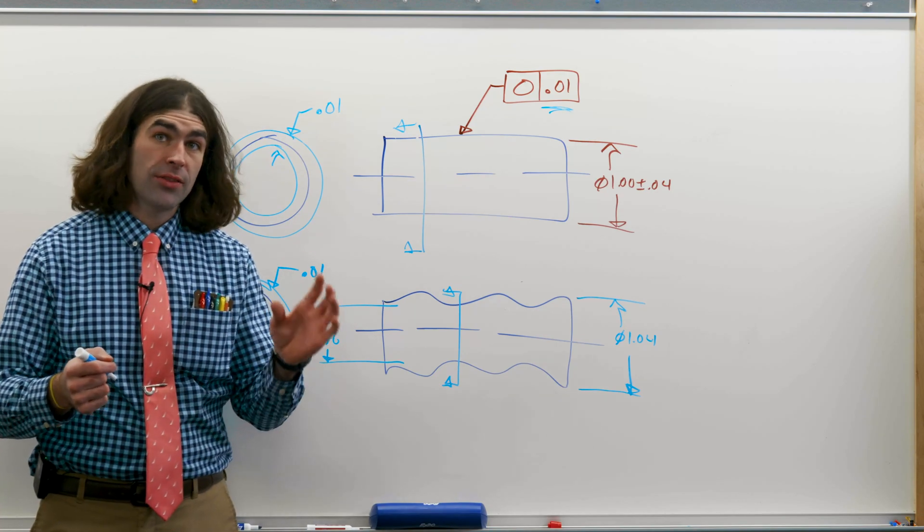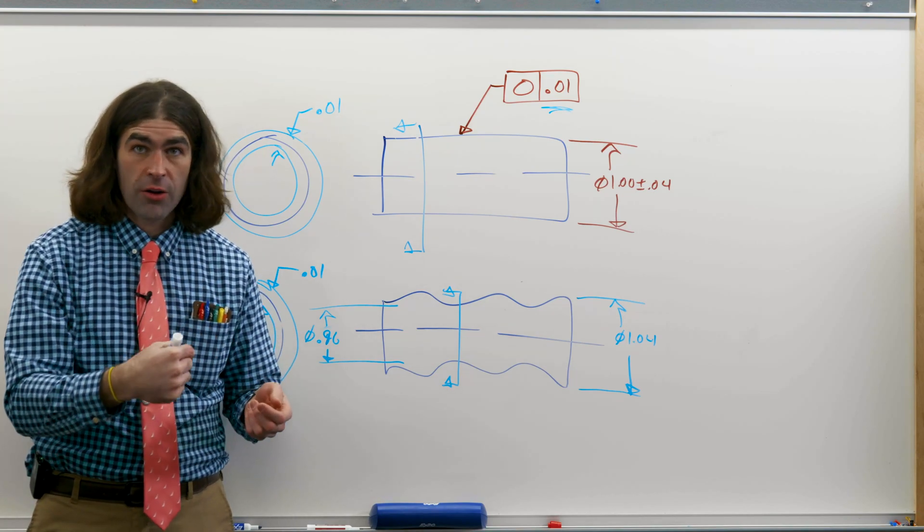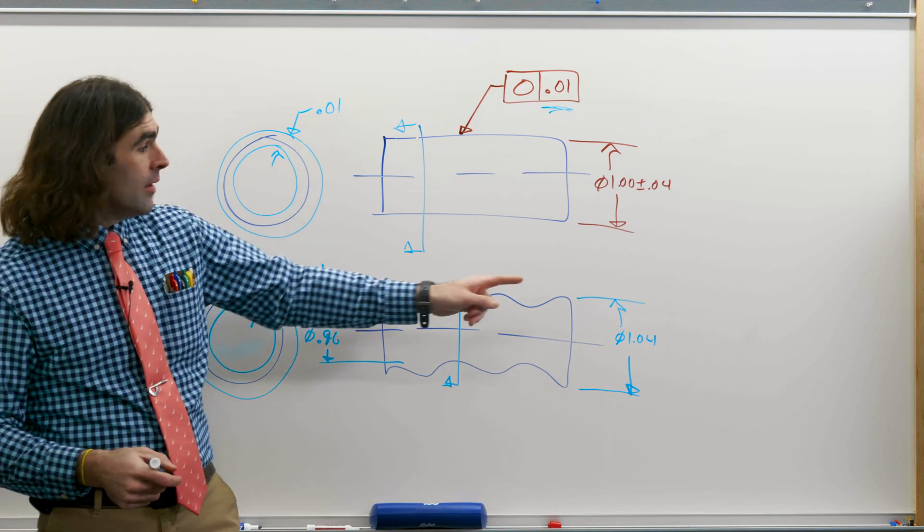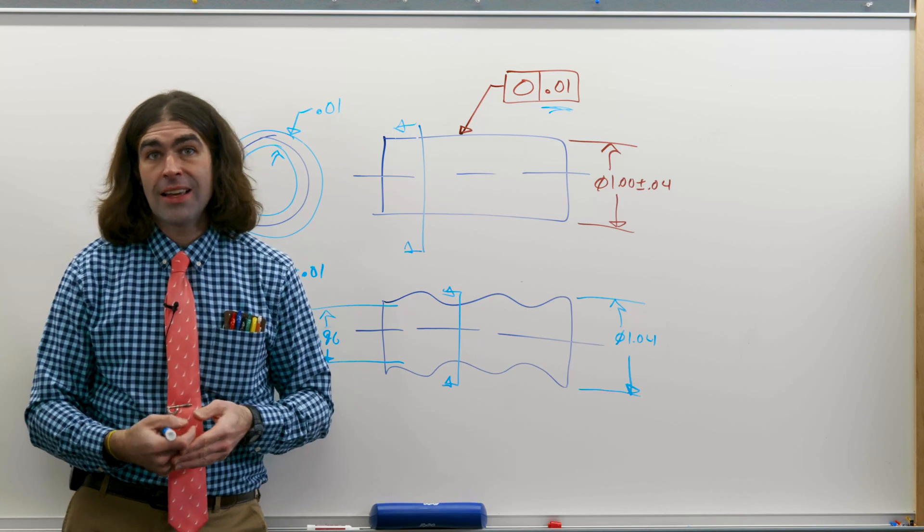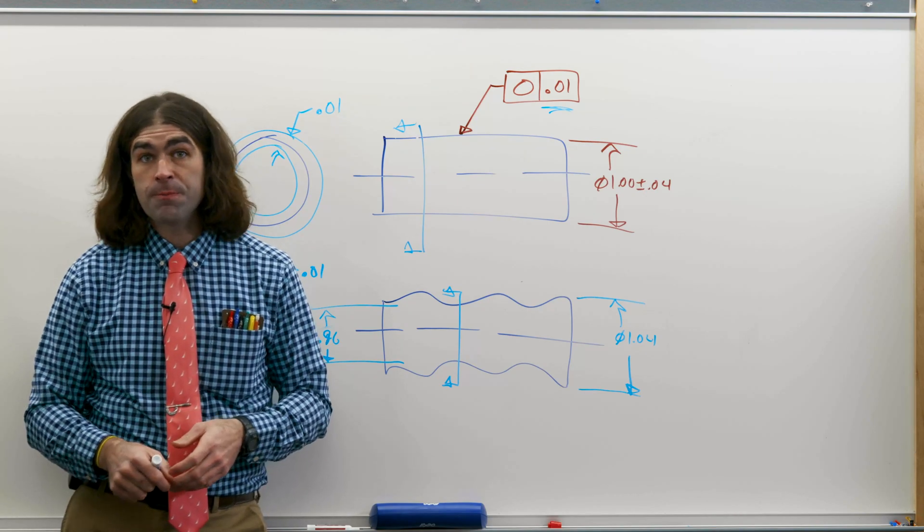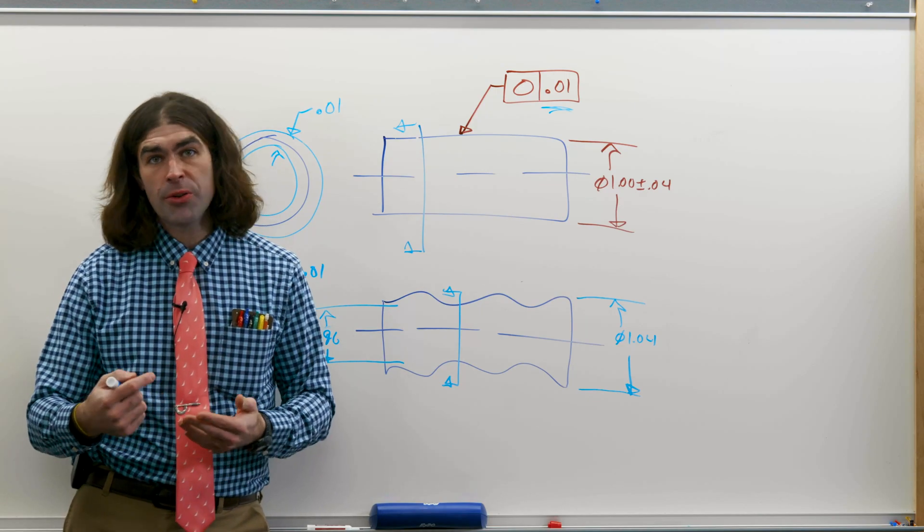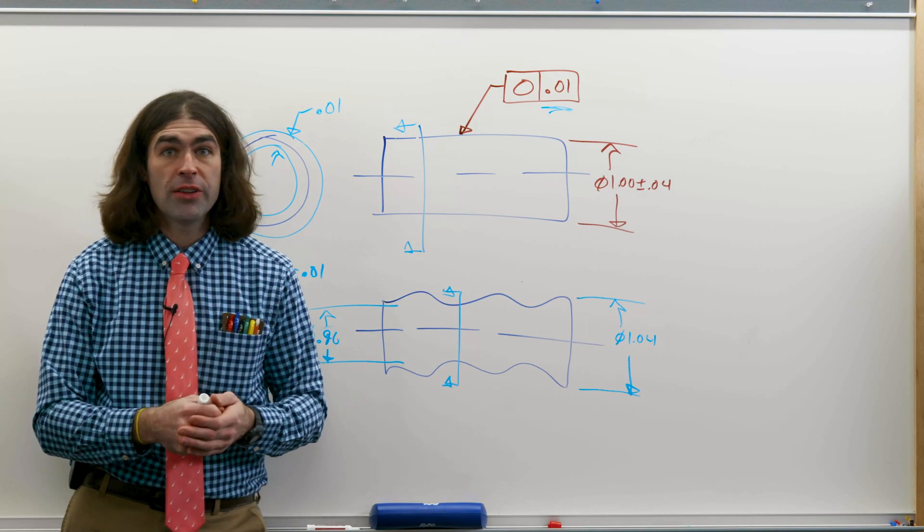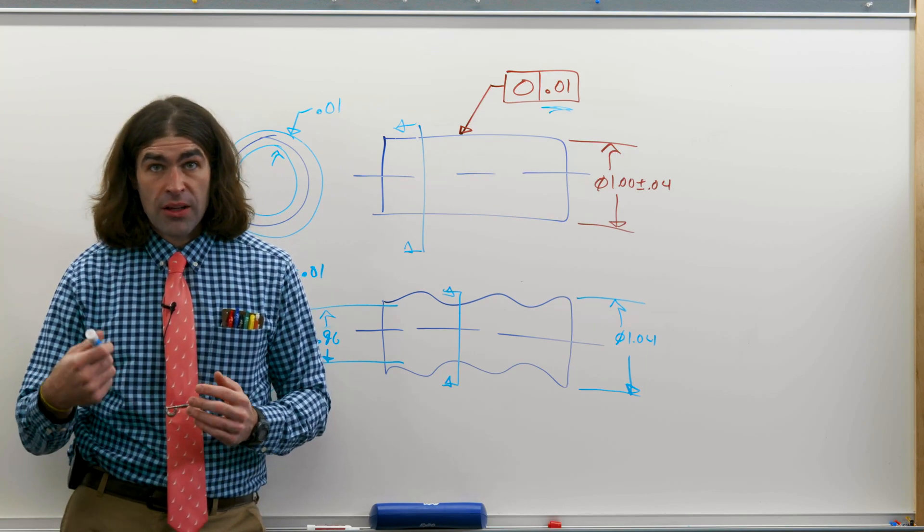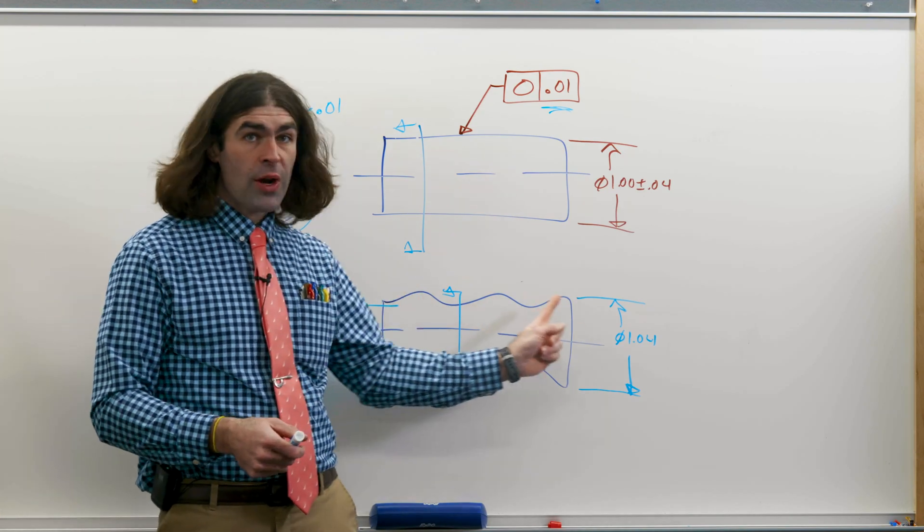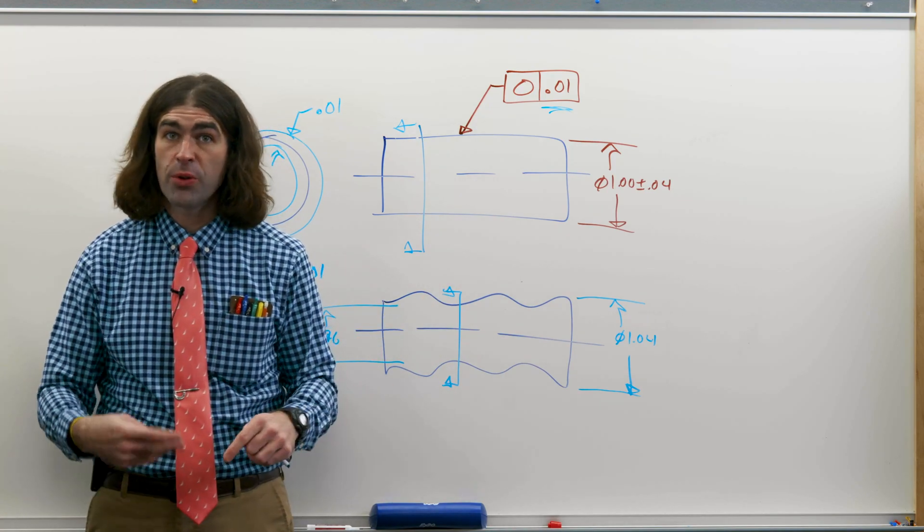So separate checks. A typical way to check this - you put it in a V block, put an indicator on it, and rotate it around. Now again, no datum reference, so there's no other features you're checking this to. You're just checking it to itself. Now you might wonder how could this possibly be acceptable? Well, normally the size tolerance will be pretty small if a circularity is applied. Now, if you wanted to control the straightness of this surface, we would use cylindricity.